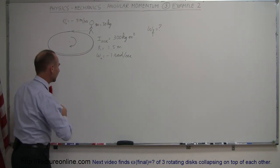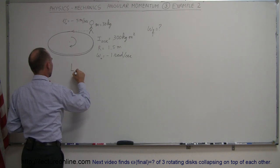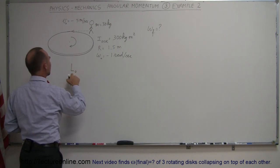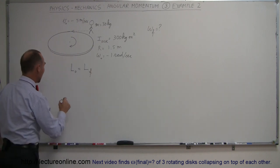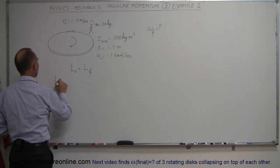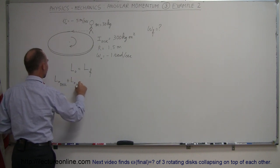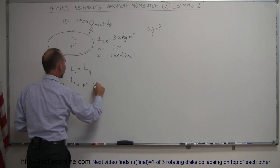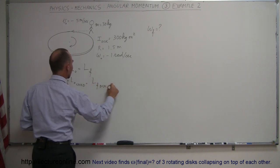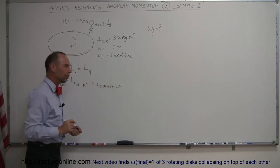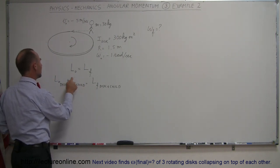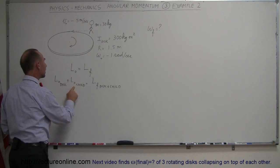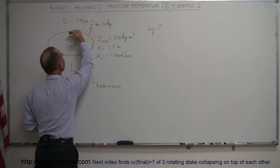The way we work that is we say that the angular momentum initially equals the angular momentum at the very end. So initially we have L initial of the disc plus L initial of the child equals L final — the angular momentum of the disc plus the child together. You may have a little trouble understanding how we get the angular momentum of the child if the child is running in linear motion.